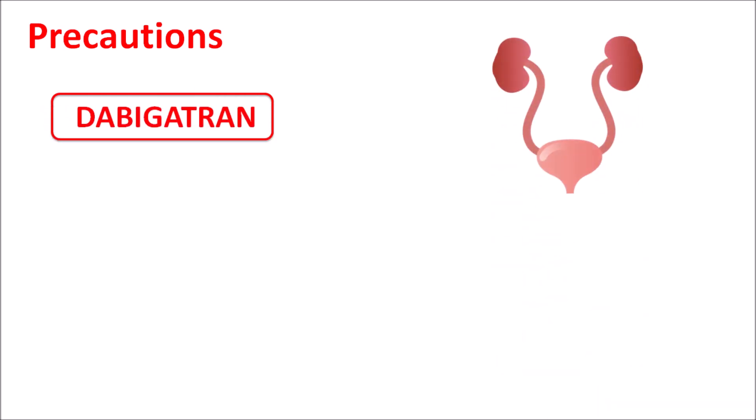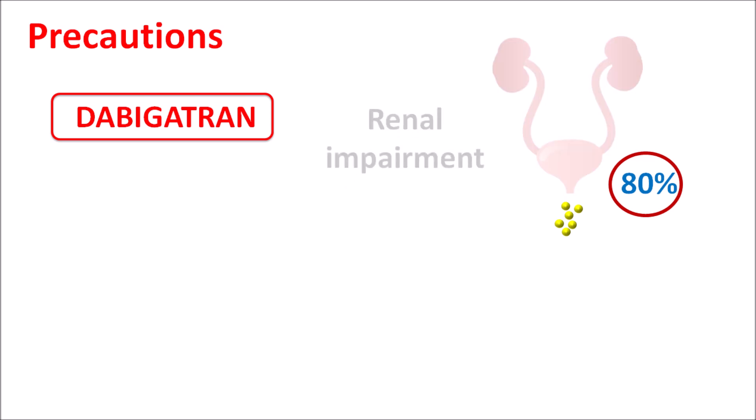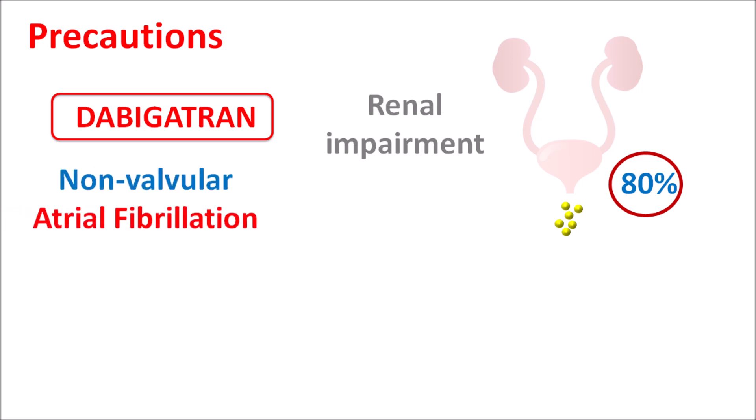Dabigatran is excreted by the renal system — around 80% of the drug is excreted renally. Any renal impairment may affect dabigatran activity, and in patients with renal impairment, levels of dabigatran are highly increased, resulting in increased bleeding risk. Dose adjustments are therefore required. For treatment of non-valvular atrial fibrillation in patients with creatinine clearance of 30–50 mL/min, no dosage adjustment is required.